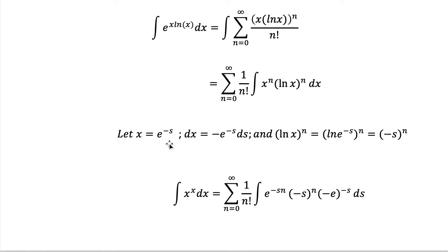Let x equal e to the power minus s. Differentiating both sides, dx equals minus e^(-s) ds. For (ln x)^n, since x equals e^(-s), we substitute ln(e^(-s)). By the rules of logarithms, the exponent minus s comes in front, giving minus s times ln e. Since ln e equals 1, we get minus s, so (ln x)^n equals (-s)^n.